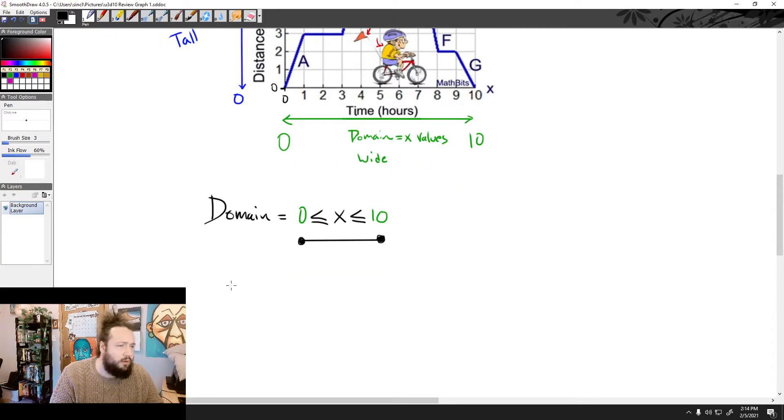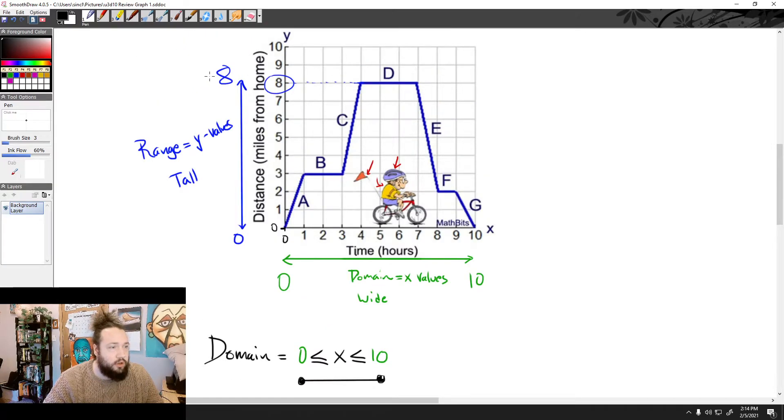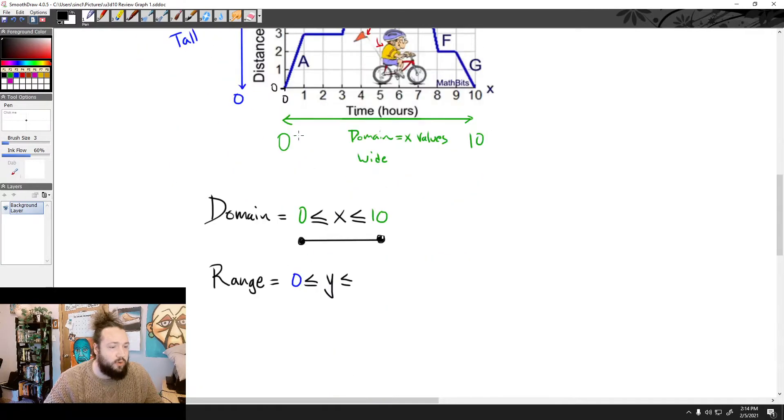And then the same thing for my range. My range is going to run from 0, and that's going to be less than or equal to, now my Y values, which is going to be less than or equal to, and this time we're going to use the top of my range right here, which is going to be 8. So we'll put an 8 there.